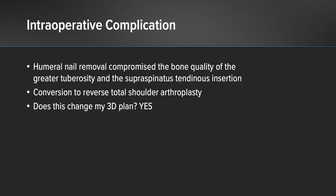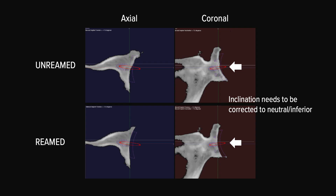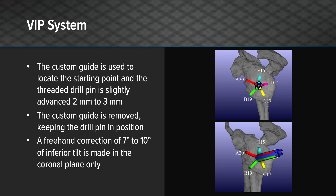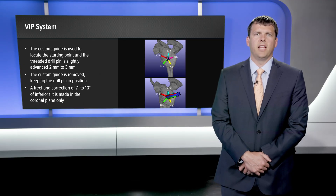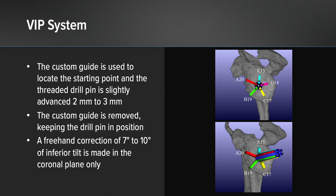Does this change my three-dimensional plan? Yes it does. With our anatomic shoulder replacement we had left around seven degrees of superior inclination. We would like to correct this down to zero or inferior inclination. We utilized our custom guide to locate the starting point for the drill pin and advanced it ever so slightly two to three millimeters so that our starting position is not changed. We then removed the guide and used a freehand correction of seven to ten degrees of inferior tilt to accommodate for our reverse base plate.